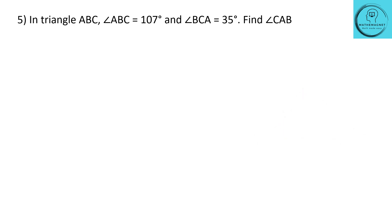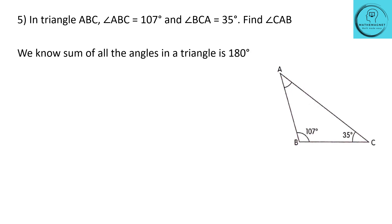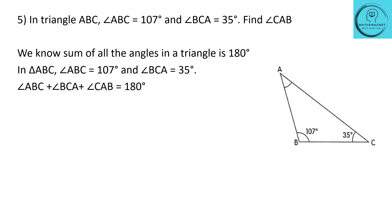Question 5: in triangle ABC, angle ABC equals 107 degrees and angle BCA equals 35 degrees. Find angle CAB. The sum of all angles in the triangle is 180 degrees. So angle ABC plus angle BCA plus angle CAB equals 180 degrees. The unknown angle CAB equals 180 minus 107 minus 35 degrees, which is equal to 38 degrees. So the unknown angle CAB is equal to 38 degrees.